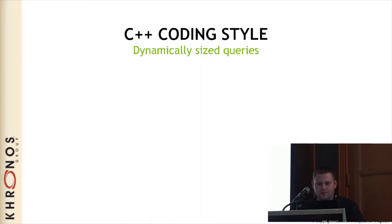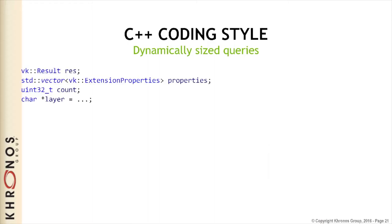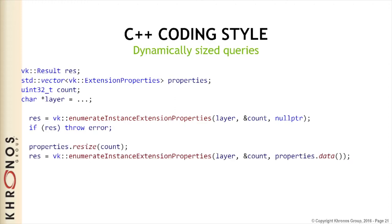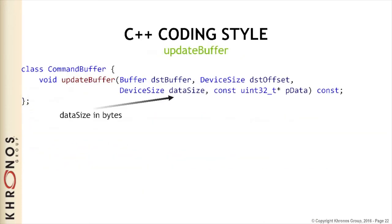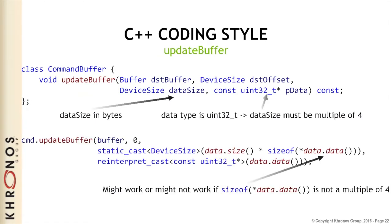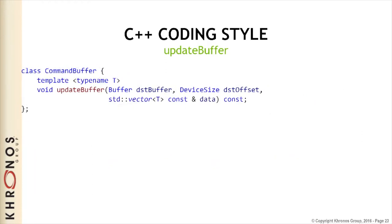One last thing: if you're updating buffers, there is a case in the API where you pass a device size and a pointer, and you have to pass in the correct values and multiply the size correctly. For this case we also have an update-buffer function which takes an std::vector of type T. This will statically assert that sizeof(T) is a multiple of 4, which ensures you are always passing a valid size to Vulkan since those updates must be a multiple of 4. If your type is not a multiple of 4 you have to use the normal version, which is also available.